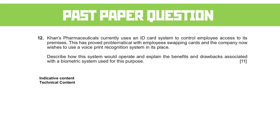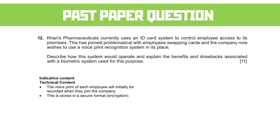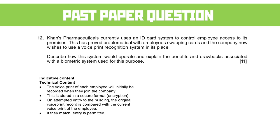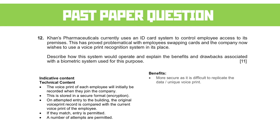The indicative content expects you to talk about the voice print of each employee being recorded when they join the company. It's stored in a secure, probably encrypted format. When you attempt to enter the building, the original voice print is compared to the current voice print of the employee. If it's a match, they're allowed in. A number of attempts are allowed. This is all pretty standard for biometrics. Moving on to the benefits: first of all, it's more secure and difficult to replicate the unique voice print.